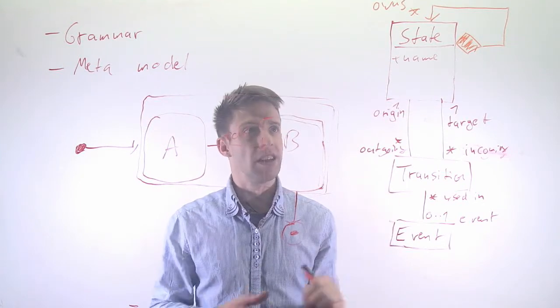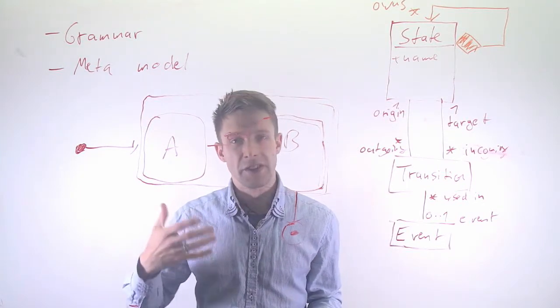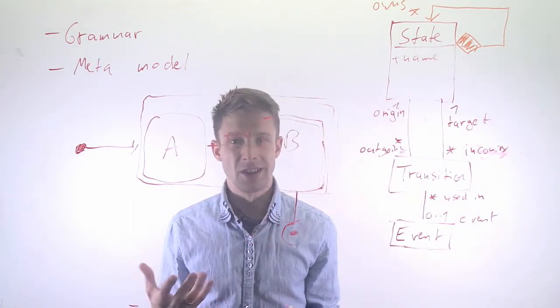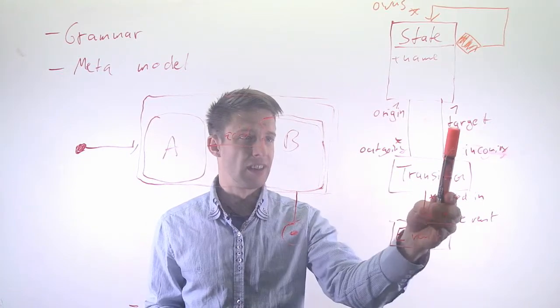There is one thing that is important to mention here that I'm not going into, is we have constraints usually. So it's not enough to have this meta model, but there are certain restrictions we have to have. For example, if you look at this, we have an origin and a target.